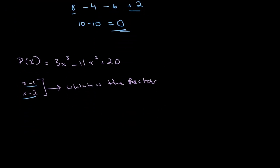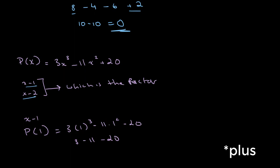So let's try this out. Is x minus 1 a factor? In order to do this, we plug in 1. So p of 1, we get 3 times 1 cubed minus 11 times 1 squared plus 20. This gives us 3 minus 11 plus 20, which is most definitely not equal to 0.